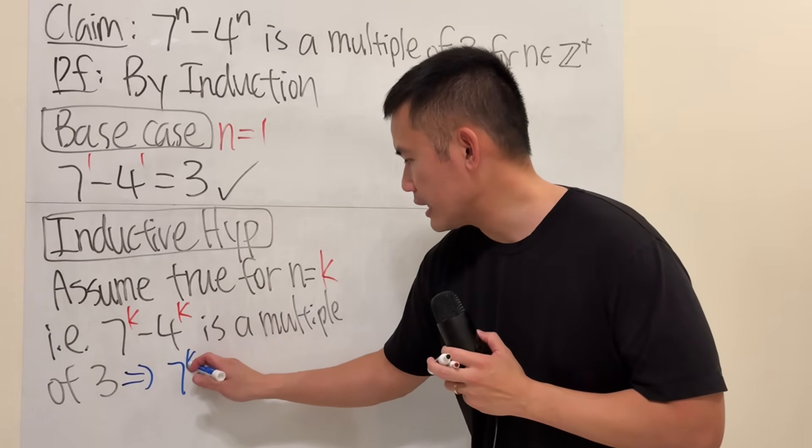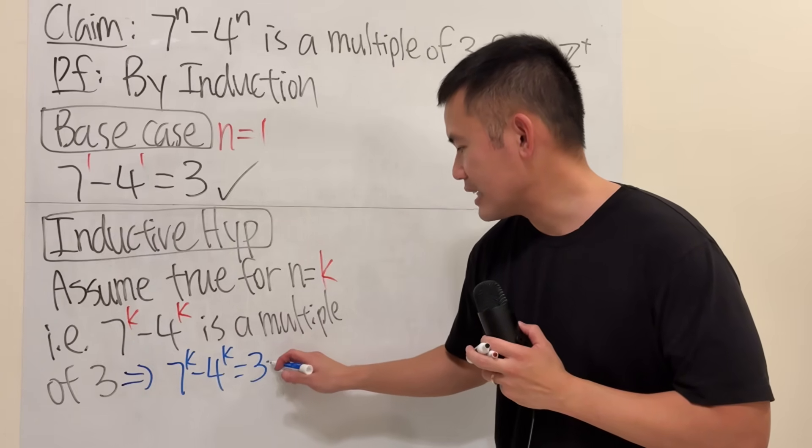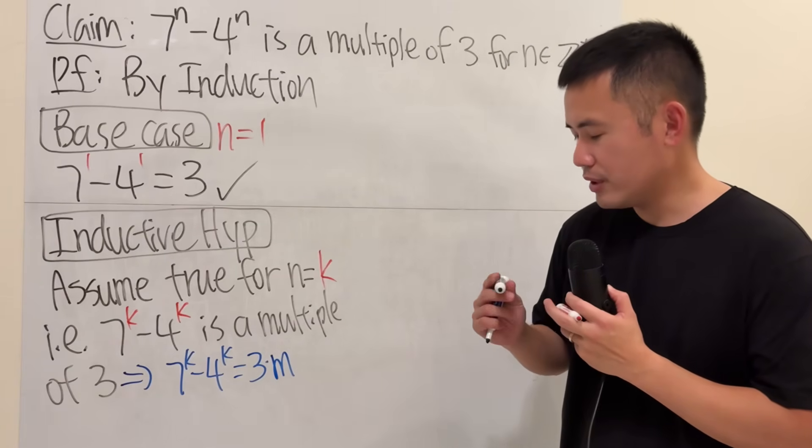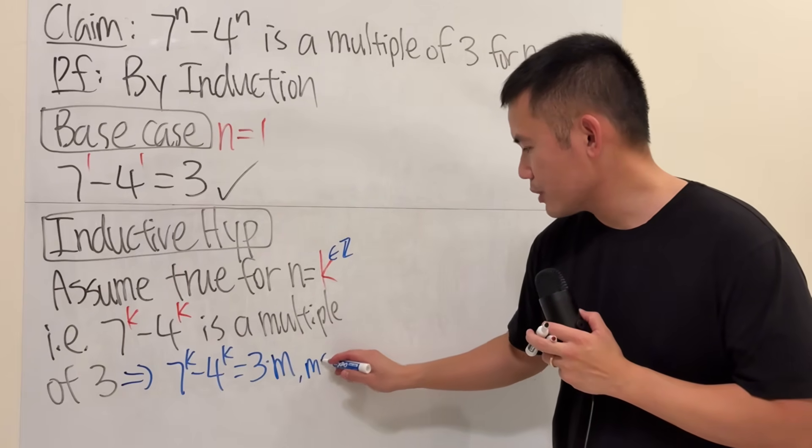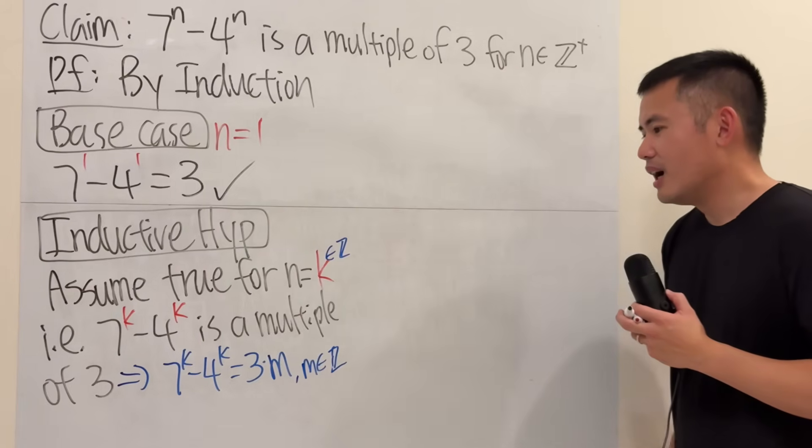Which is 7 to the k minus 4 to the k being equal to 3 times some integer, that's the m. And of course, right here, I will have to mention that k is an integer, and m is also an integer. Just to be a little bit more precise.